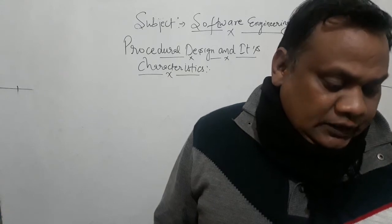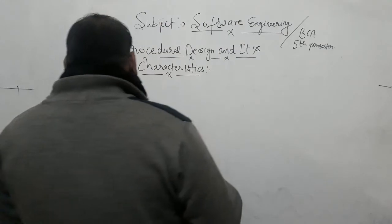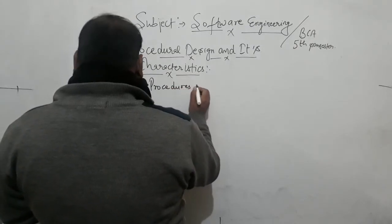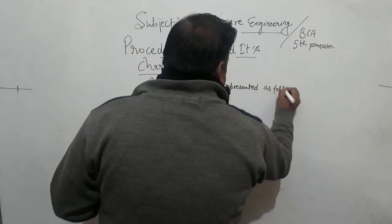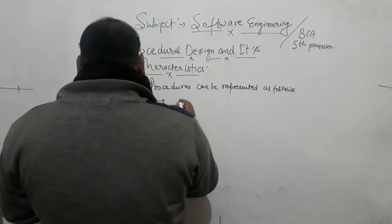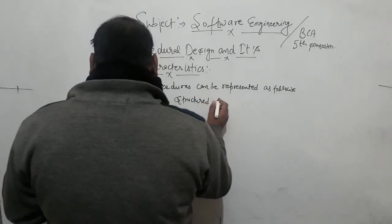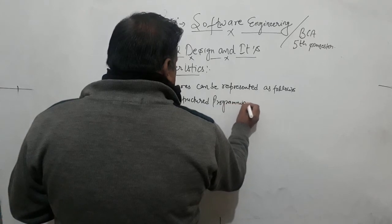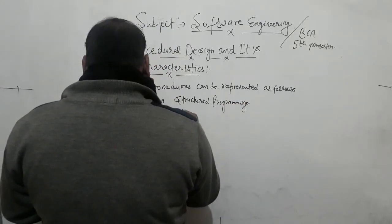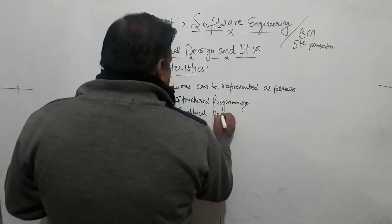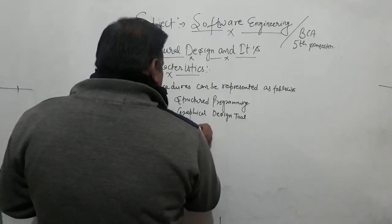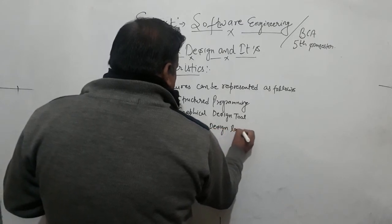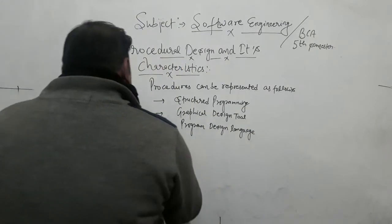Procedure can be represented in the following ways. First is Structural Programming. Second is Graphical Design. Third is Program Design Language and Pseudocode. These are the main representations used to describe procedure design.